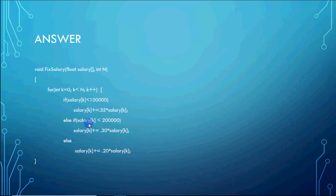If that condition is not met, then check if salary[k] is less than 2 lakh — that means the salary is between 1 lakh and 2 lakh. In that case, 30% of the salary is calculated and added to the salary itself.